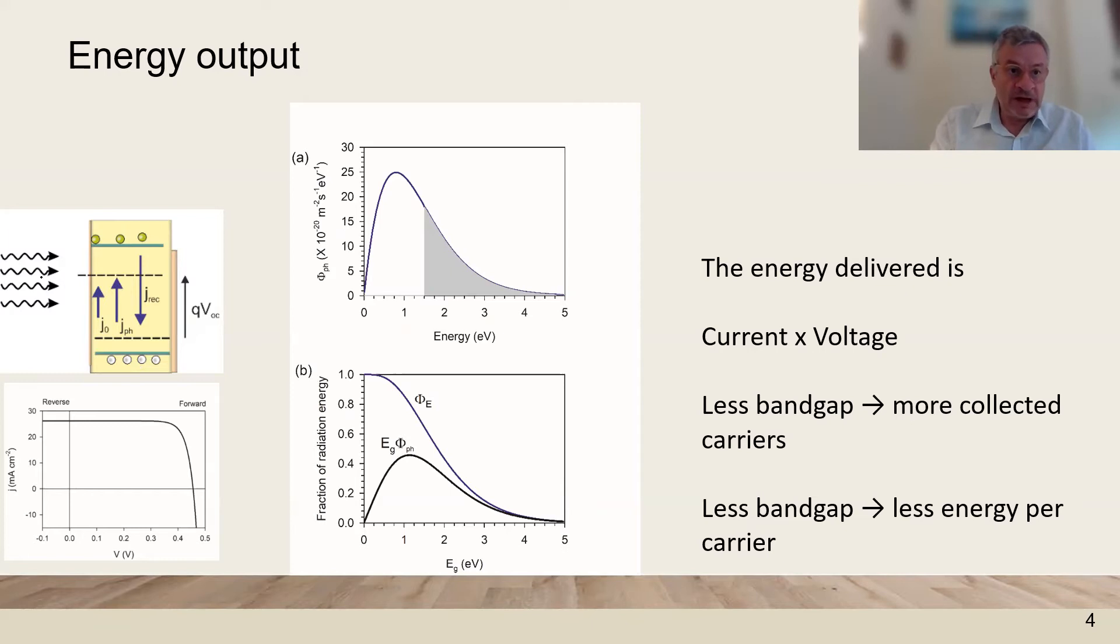So there will be energy in terms of photons coming to the solar cell. Then the solar cell generates a JV curve. It has a photocurrent, a photo voltage, a fill factor. And the energy is basically a current, electrical current times the voltage.